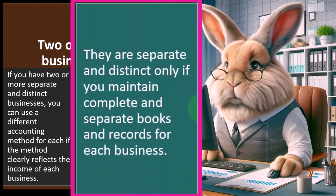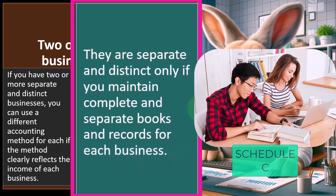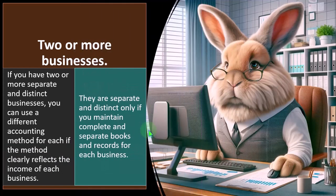The businesses are separate and distinct only if you maintain complete and separate books and records for each. The IRS will be skeptical if you have one set of books and then split them into two Schedule C's using two accounting methods to manipulate income. They would need to be two genuinely separate businesses with two different sets of books, justifiably reported on two different Schedule C's, each with the appropriate accounting method.